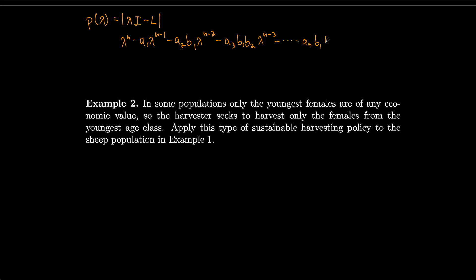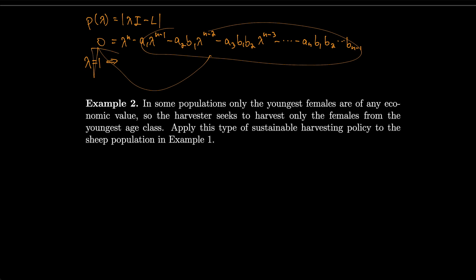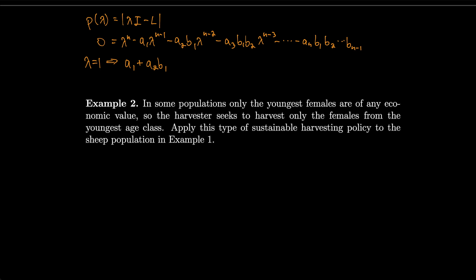Setting lambda equal to 1 and moving terms to the other side, we get: a1 plus a2·b1 plus a3·b1·b2 and so on through a_n·b1·b2···b_{n-1} equal to 1. We call this sum the net reproduction rate, and we use r to denote it.